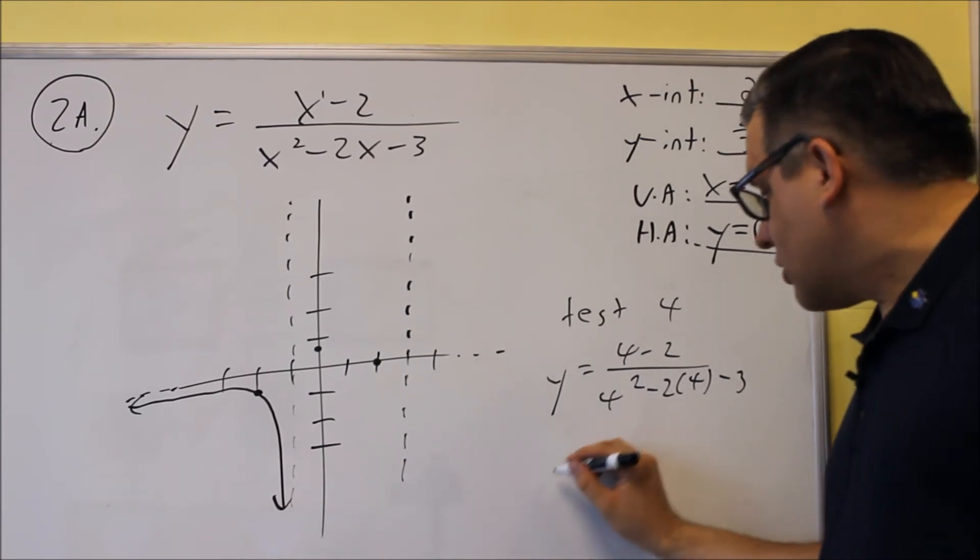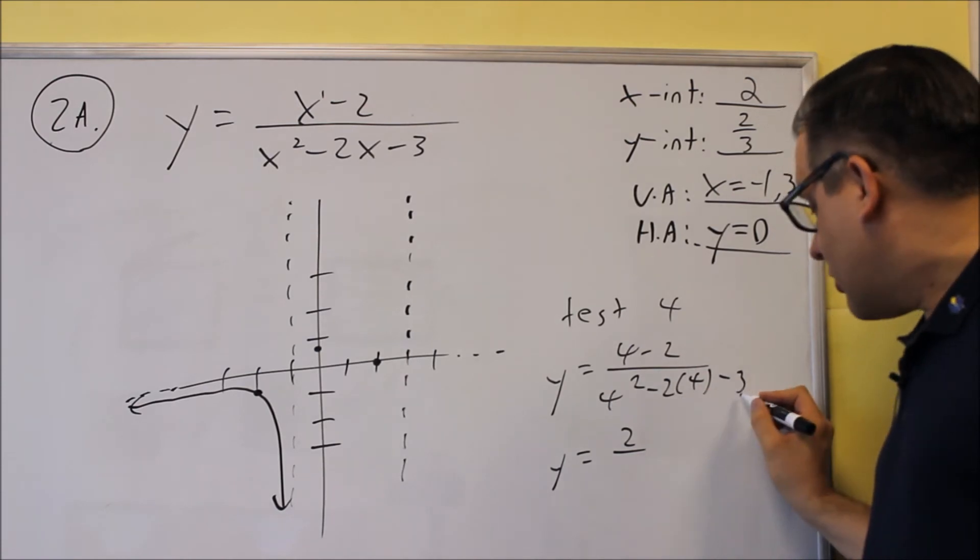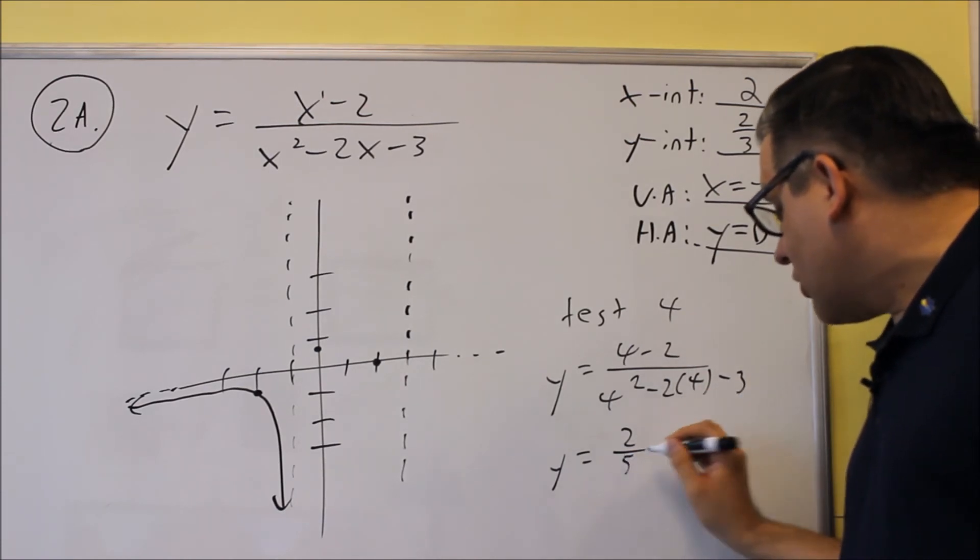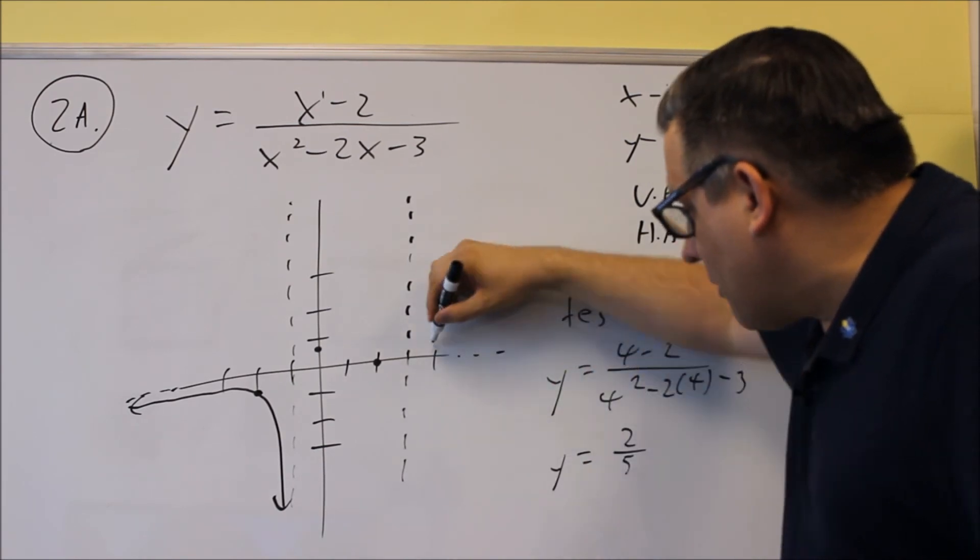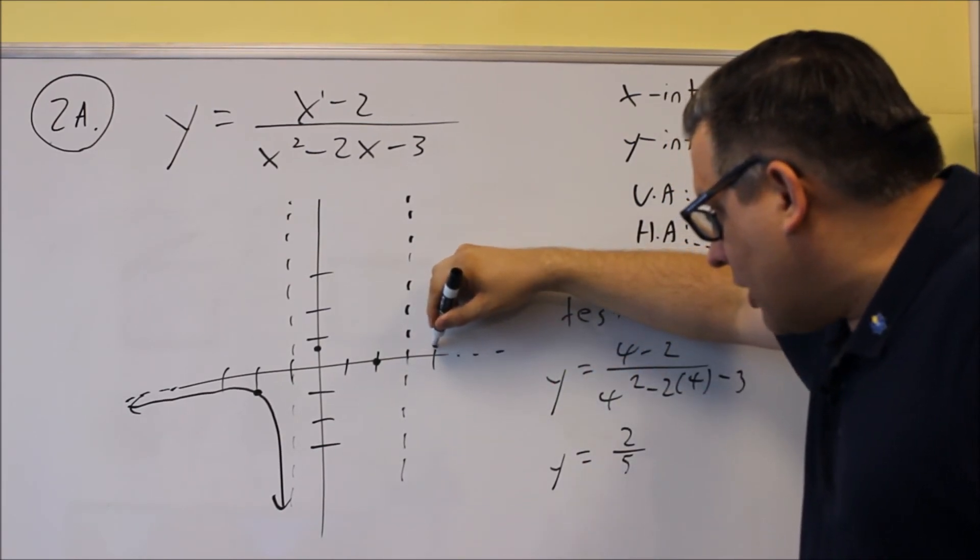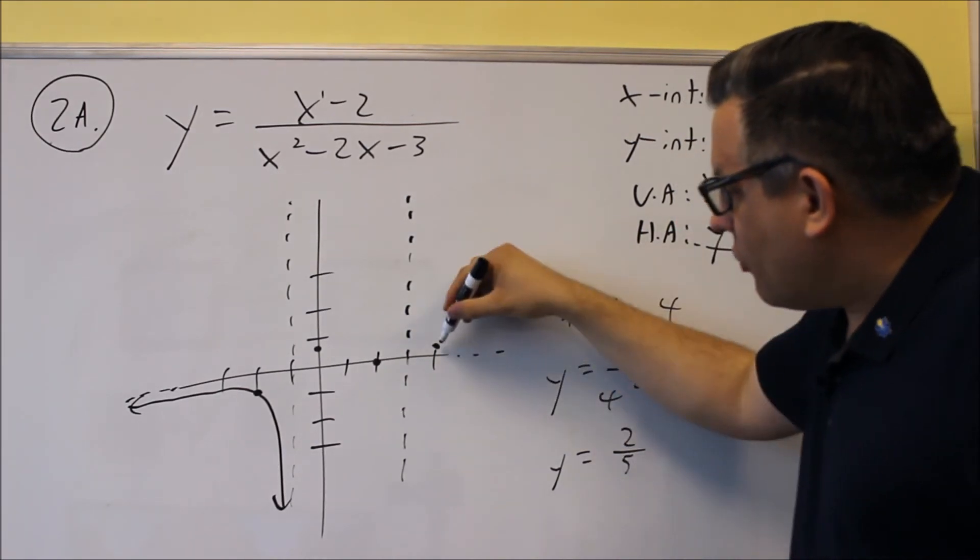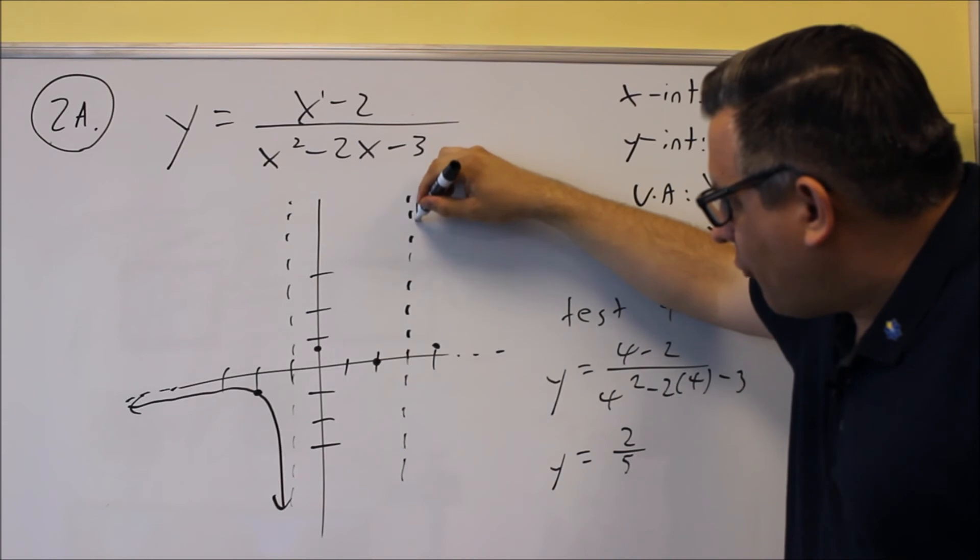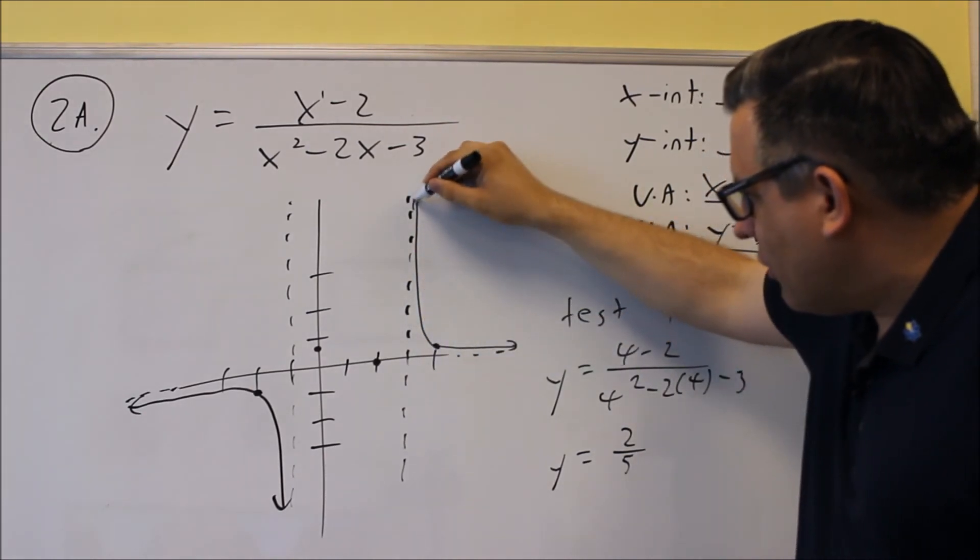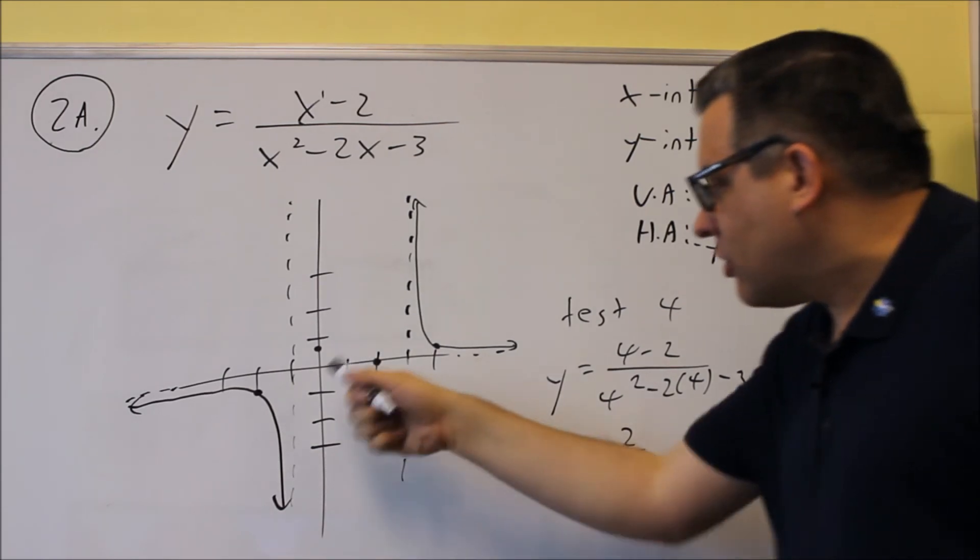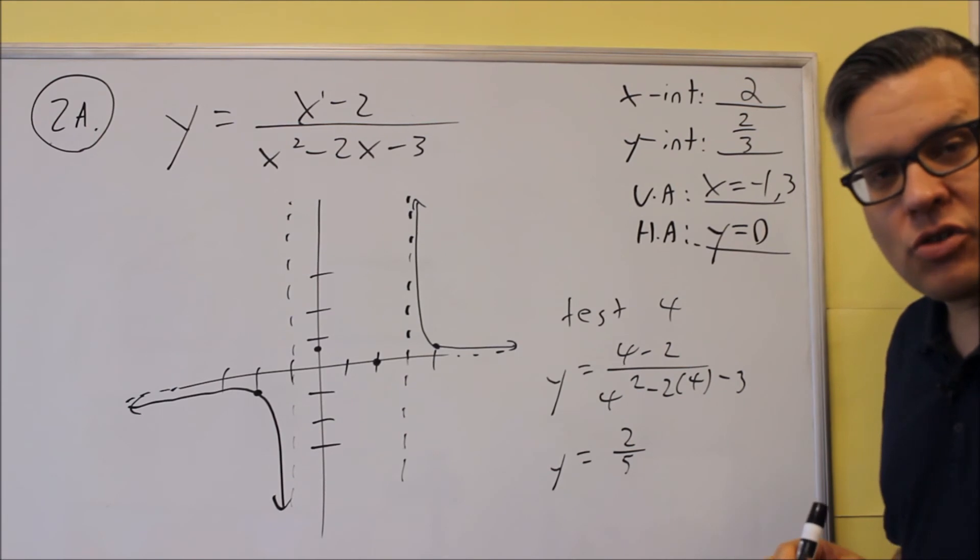We have sixteen minus eight is eight, eight minus three is five, so I get two-fifths for that one. Now two-fifths is going to be about right here, pretty close to the x-axis, it's about point two. So the graph is going to now fall, it's going to hit this point, and then follow the horizontal one. So we want to get these two points in here, that's going to tell us exactly where it is and give us a little bit more detail about this graph.